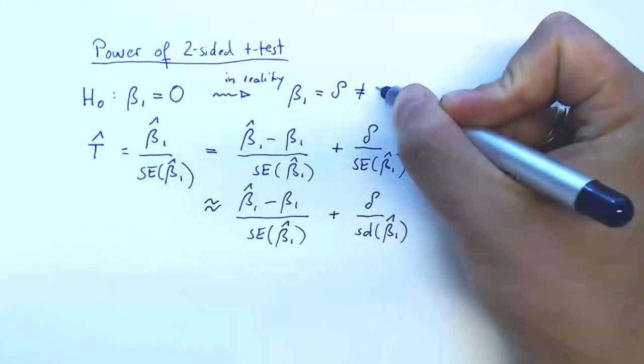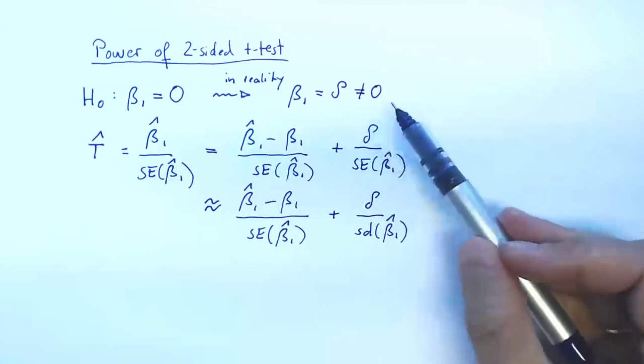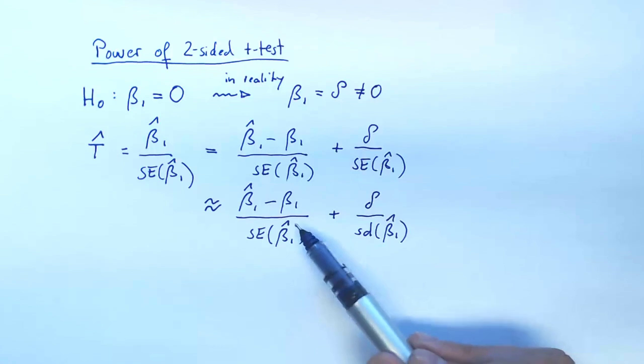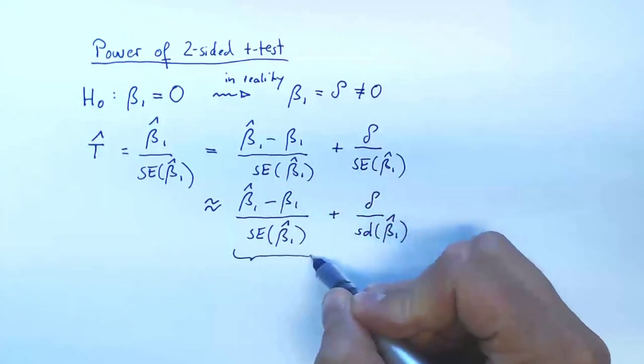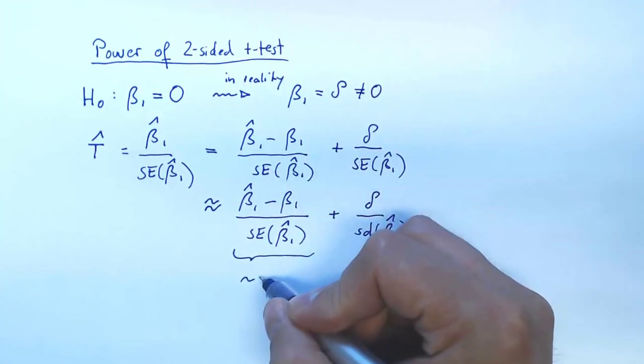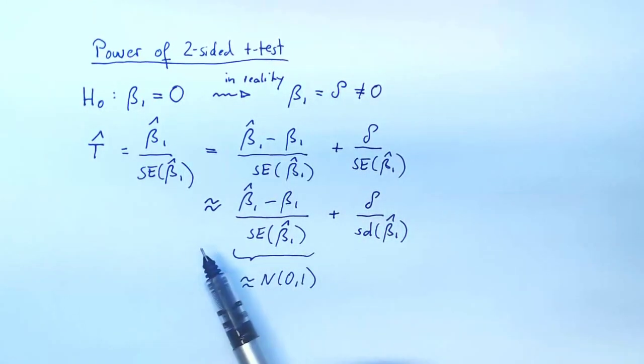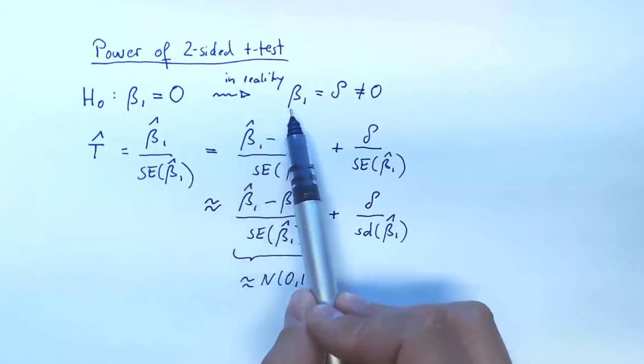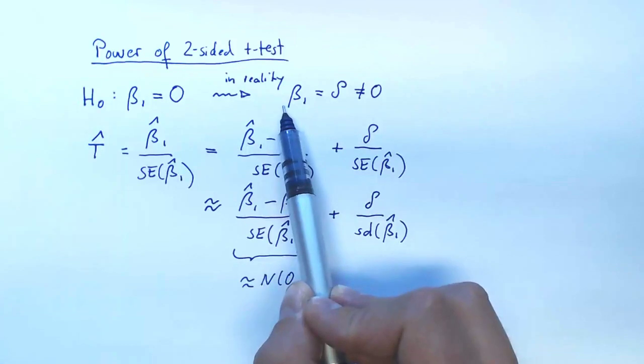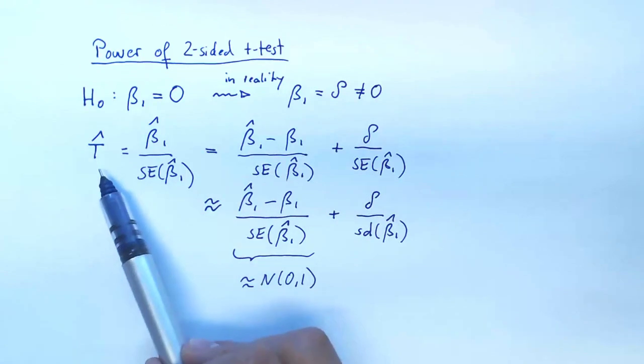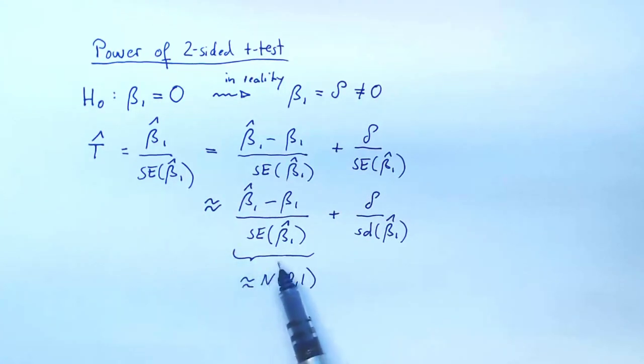So delta better be not zero. So this will be some fixed number. This will be approximately a standard normal distribution. So in this sort of scenario where the null hypothesis is false and beta 1 is really a number, then the test statistic behaves like a standard normal that is shifted.